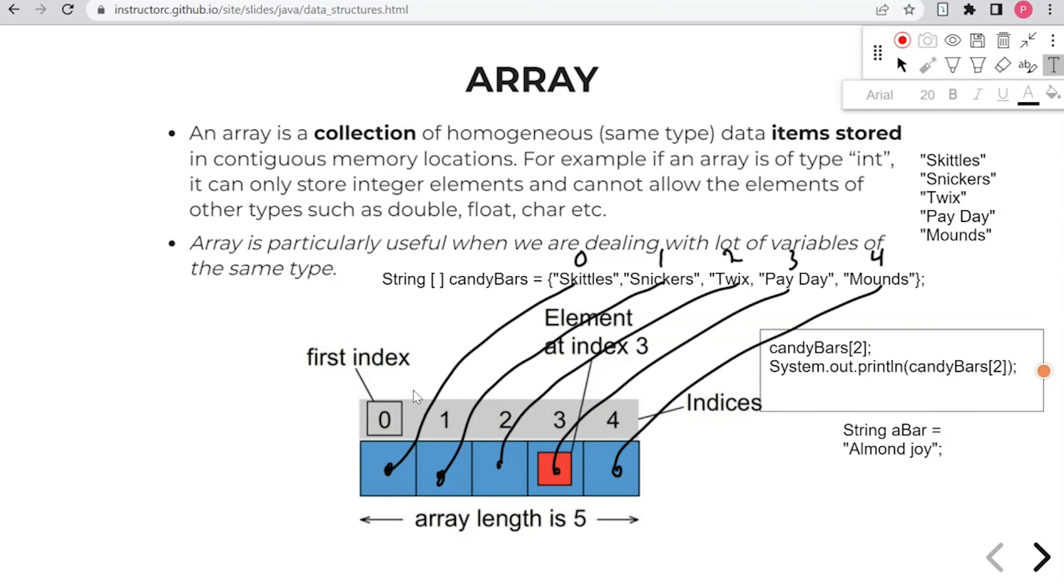And again, not to make this confusing, but an array is just a list. And so with almond joy here, we say string a bar that can only hold one item, and this is what we're accustomed to. We've done this up until this point in the previous videos. But if we wanted to hold an entire list, we would have to add the brackets to indicate that it's an array.